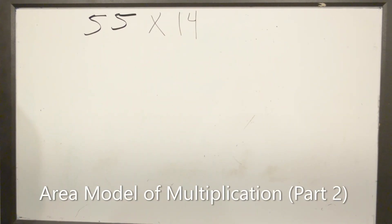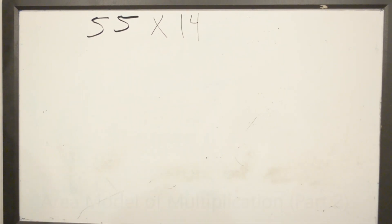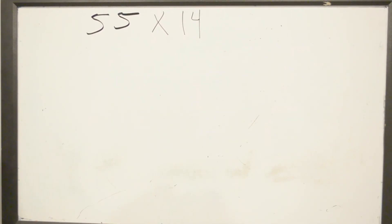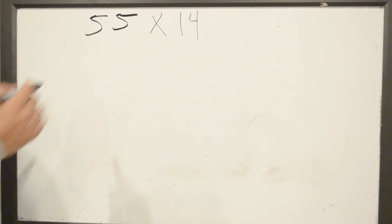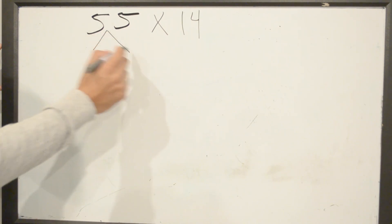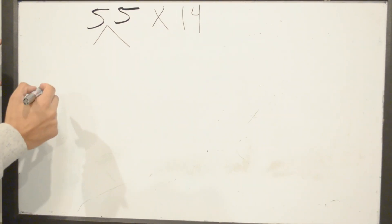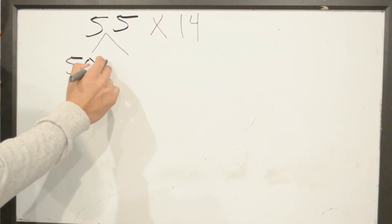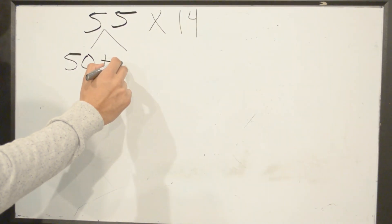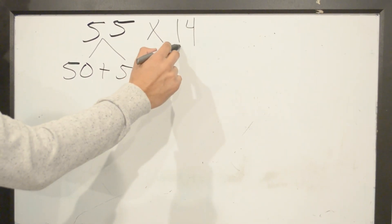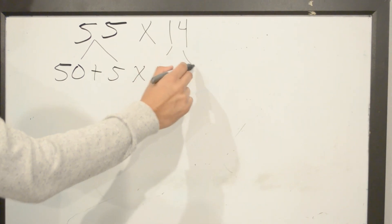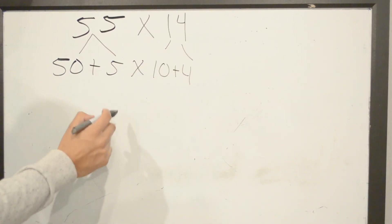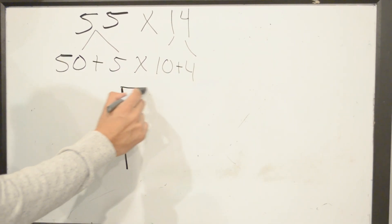We are working again on area model of multiplication, multiplying 55 times 14. Same thing we did on the other problem: we are going to expand the numbers. So we are going to expand 55. We have 5 in the tens, so we're going to have 50 plus 5, then we have 5 in the ones place. We have 1 in the tens place and we have 4 in the ones place. After that, you want to go ahead and draw a box.